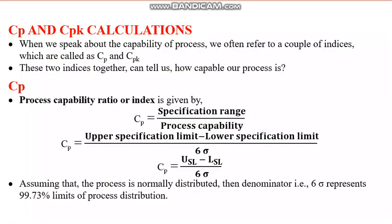Now let us move to another important topic: CP and CPK indices. These two indices are about process capabilities — they are used to decide whether our process is capable of producing within the design tolerances or not. First, let us talk about the CP index, which is the process capability index or process capability ratio, also sometimes called process potential.